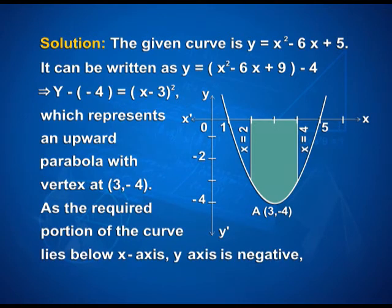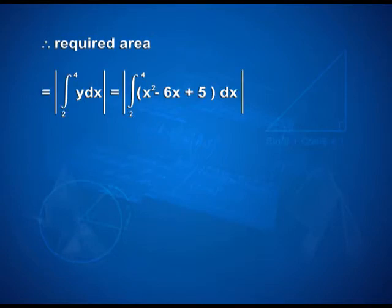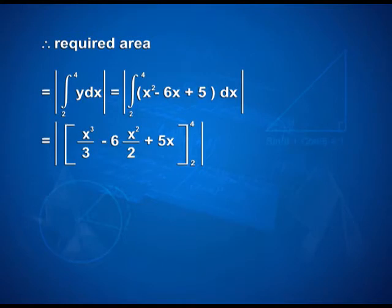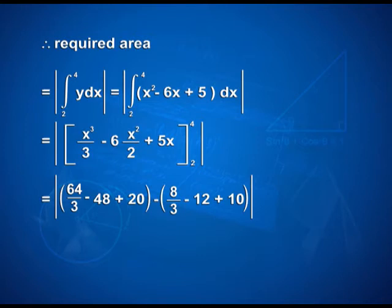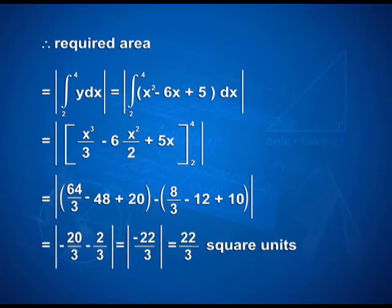As the required portion of the curve lies below the x-axis, y is negative. Therefore, the required area equals the modulus of the integral from 2 to 4 of y dx, which equals the modulus of the integral from 2 to 4 of (x squared minus 6x plus 5) dx. That gives the modulus of [x cubed/3 minus 3x squared plus 5x] with limits 2 and 4, which equals the modulus of (64/3 minus 48 plus 20 minus 8/3 minus 12 plus 10), giving modulus of (-22/3), so the area is 22/3 square units.